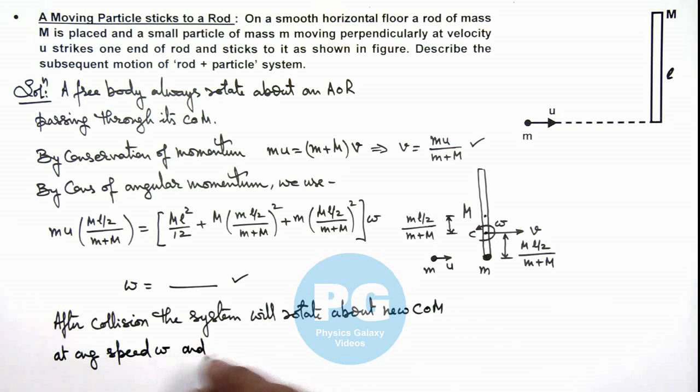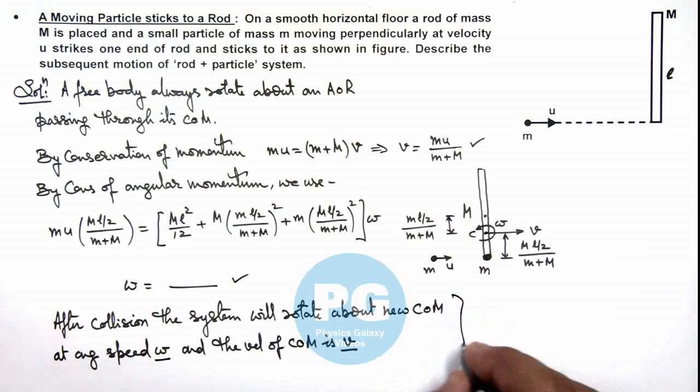And the velocity of center of mass is v. Here v we have calculated by conservation of linear momentum and omega we have calculated by conservation of angular momentum. That is the final result of the problem or the description of subsequent motion of this rod plus particle system.